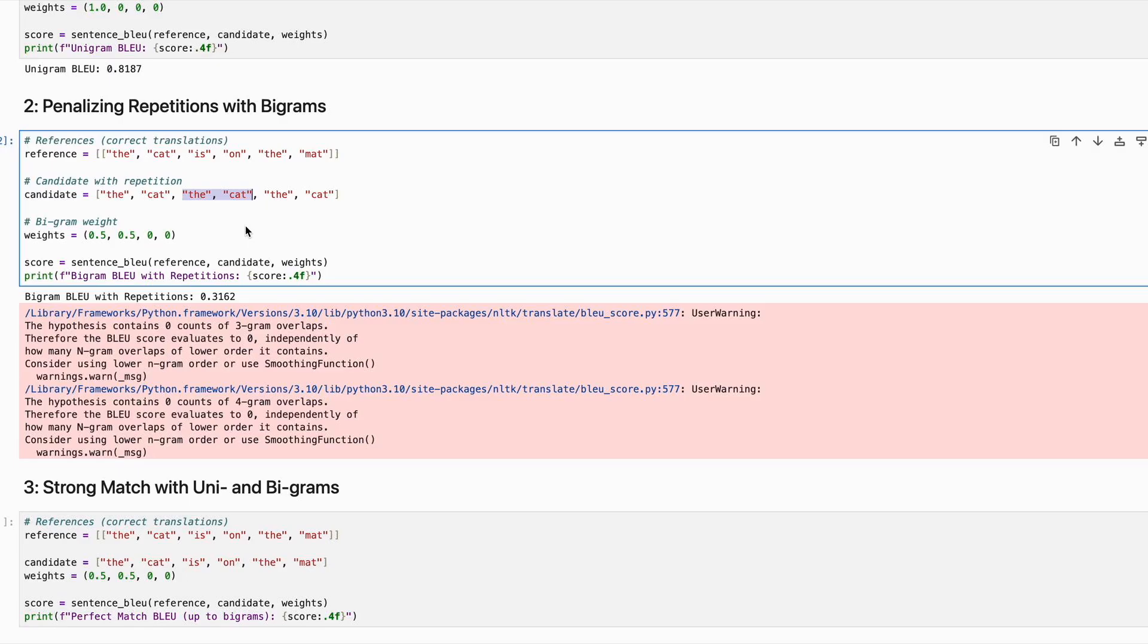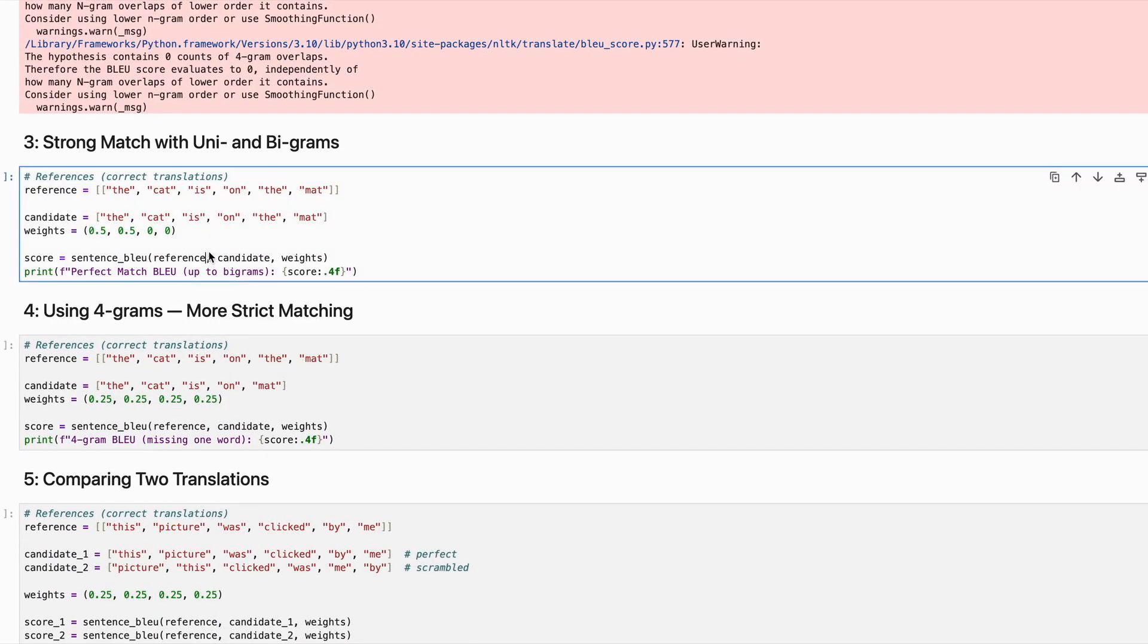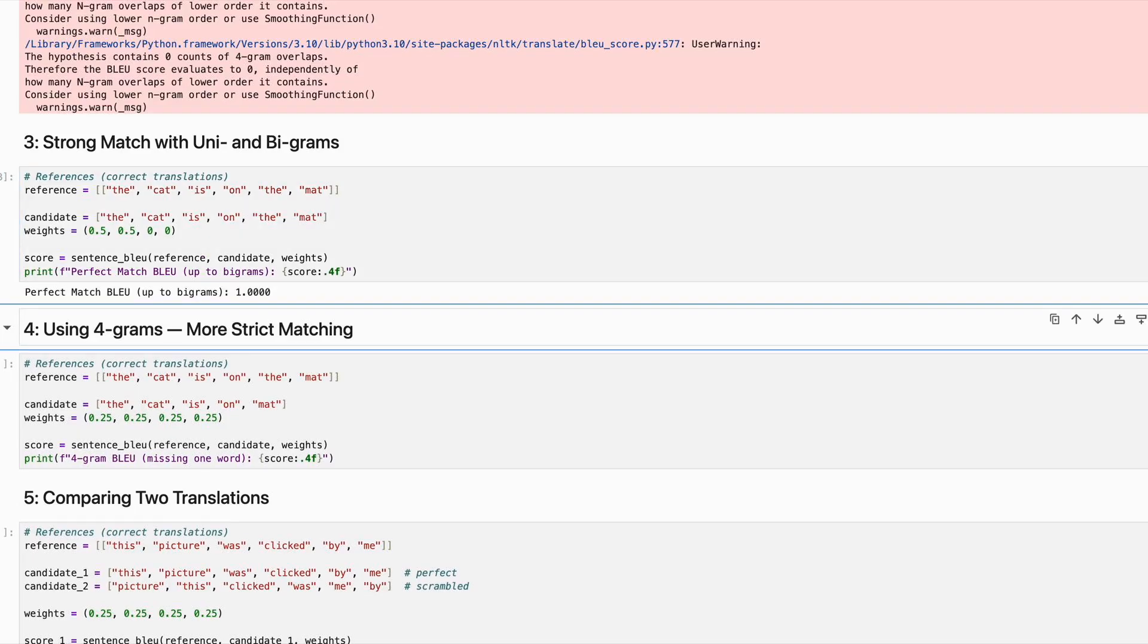That way, it is a better indicative of the model performance. Let's look at the strong match here. In the case when the references and the candidates are exactly the same, you can see that the BLEU score is one.